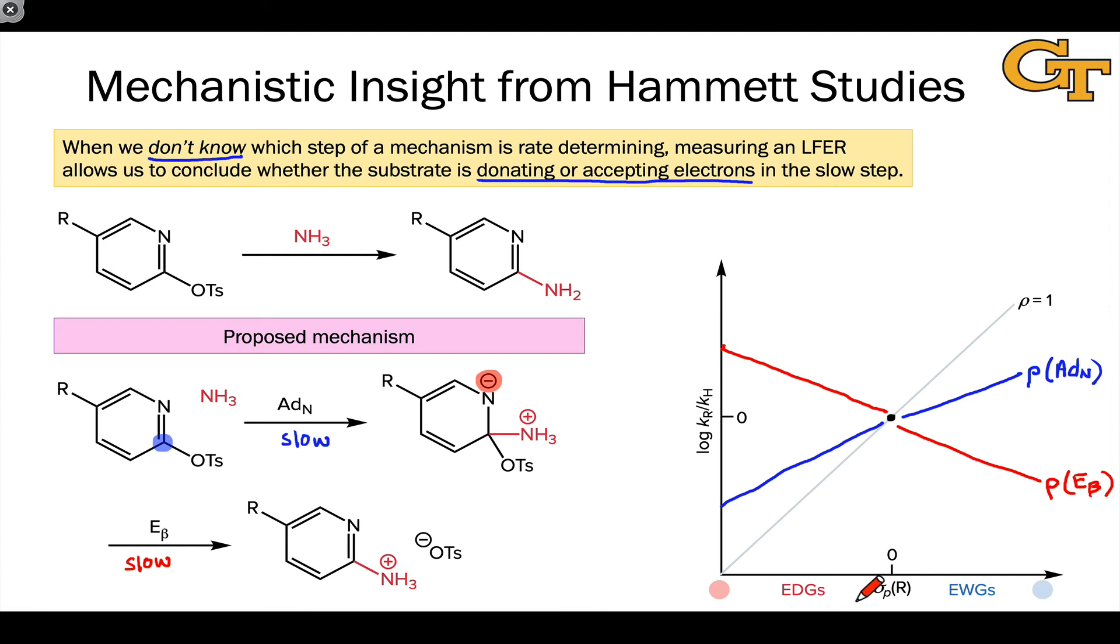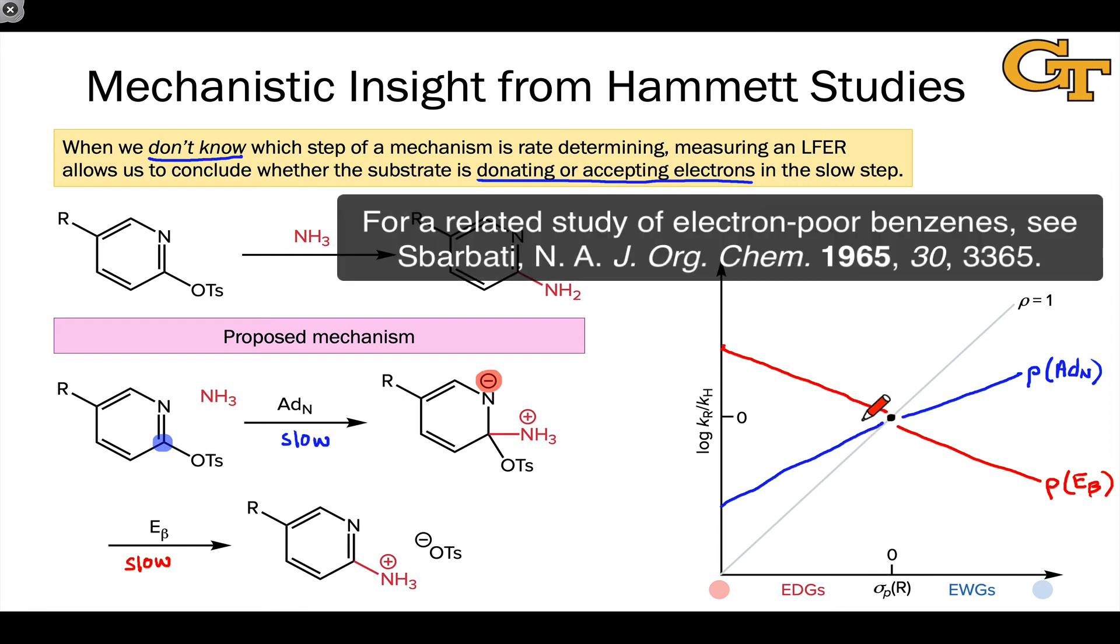Which is it? I don't know—that's why we make these measurements. Say you made these measurements and obtained data points that led to a line of best fit that was the blue line. We would then conclude that the rate determining step is the first nucleophilic addition step.